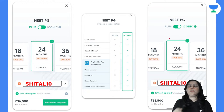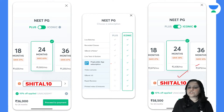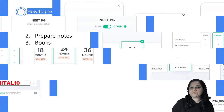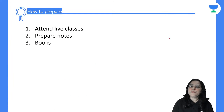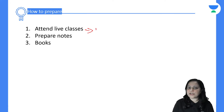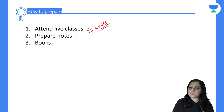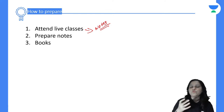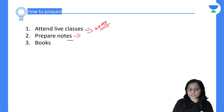All subscriptions are available with different durations and prices. You can use the promo code SHITAL10 to get an additional discount. To prepare for exams, you can attend live classes and prepare notes during the class itself, as I cover all topics by referring to different books. In one lecture, you will get a large amount of content, or you can use prepared notes available with certain subscriptions, or go for books available in the market.